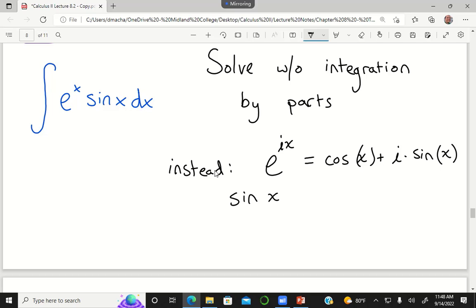e to the power i x is equal to cosine x plus i times sine x. sine of x is equal to e to the power i x minus e to the power negative i x divided by 2i.